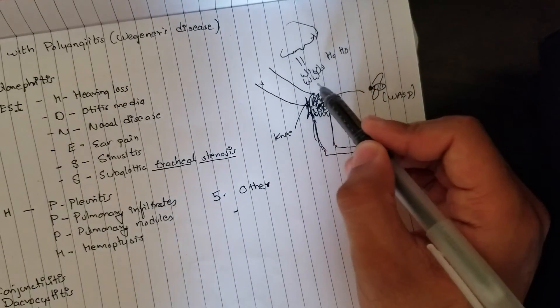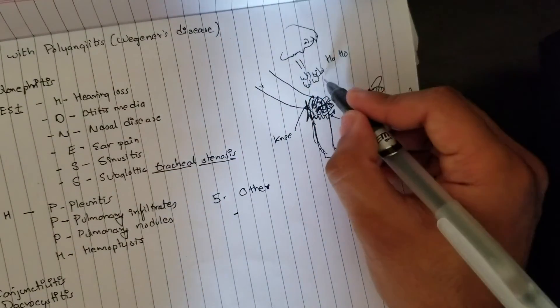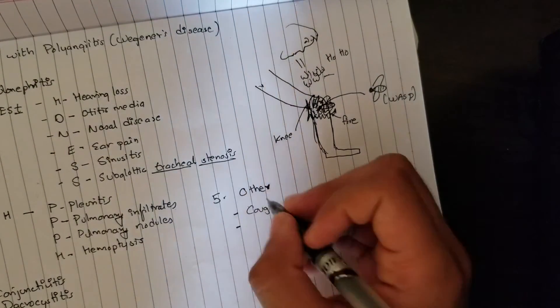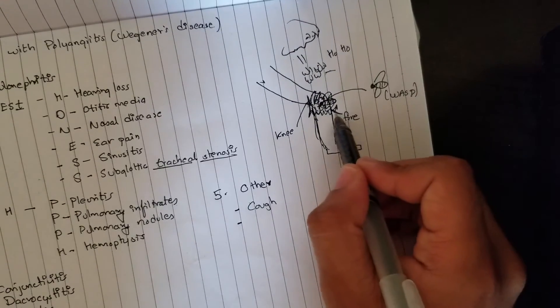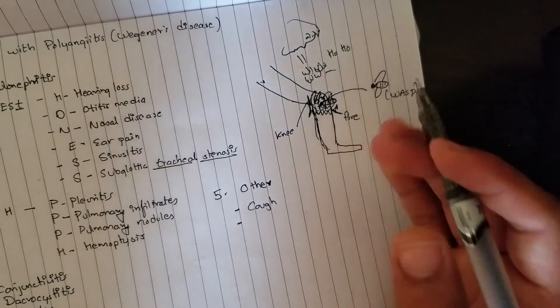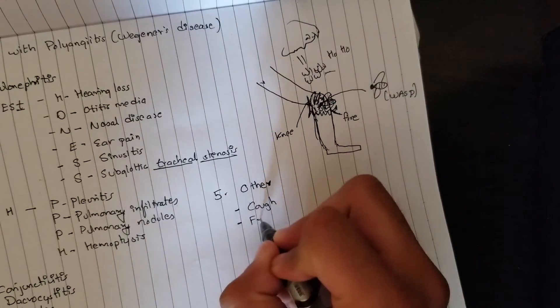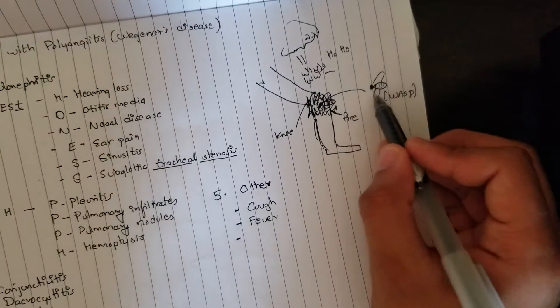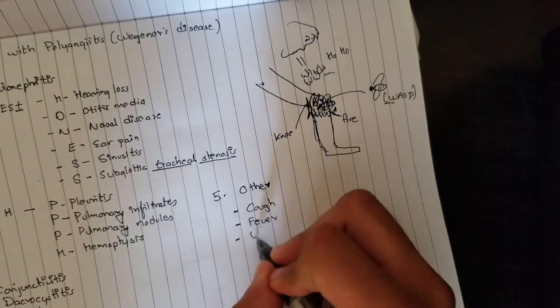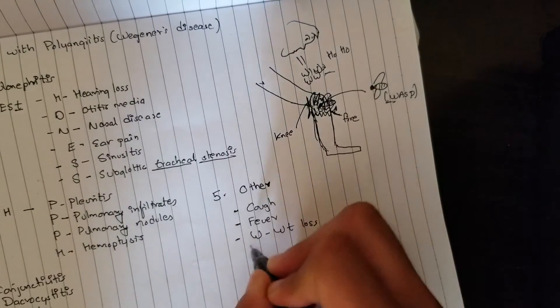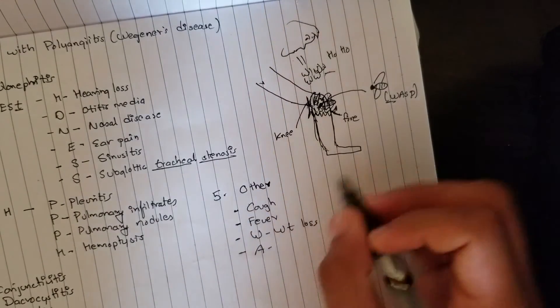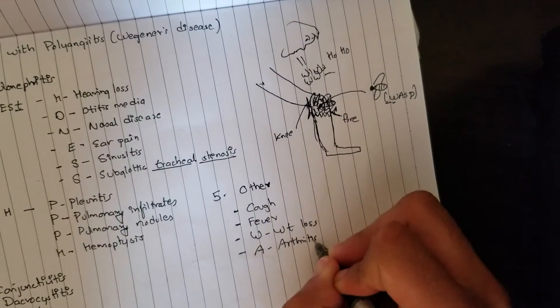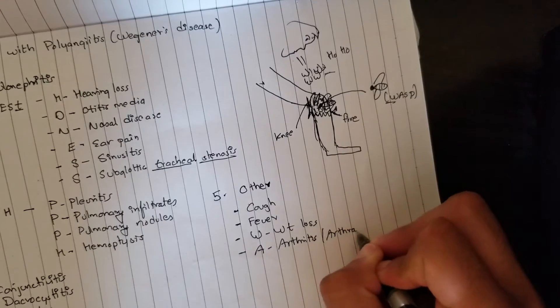What do we learn from here? You see this man is blowing out here, this looks like a cough, so the first manifestation is cough. Remember this is fire, fire means there is increase in temperature, which means fever. Let's go to this wasp now. In the wasp, W for weight loss, A for arthritis or arthralgias, pain in the joint.